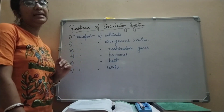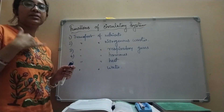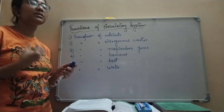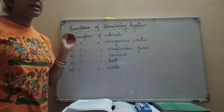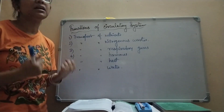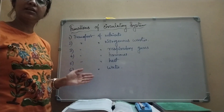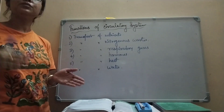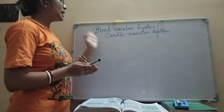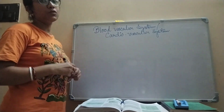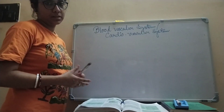The next function is transport of heat and water. Water we drink is transported throughout the body to the necessary organs through the circulatory system, and heat is also transported. These are the main and major functions — why we need the circulatory system. We will study the blood vascular system or cardiovascular system in the case of higher invertebrates, vertebrates, and human beings.